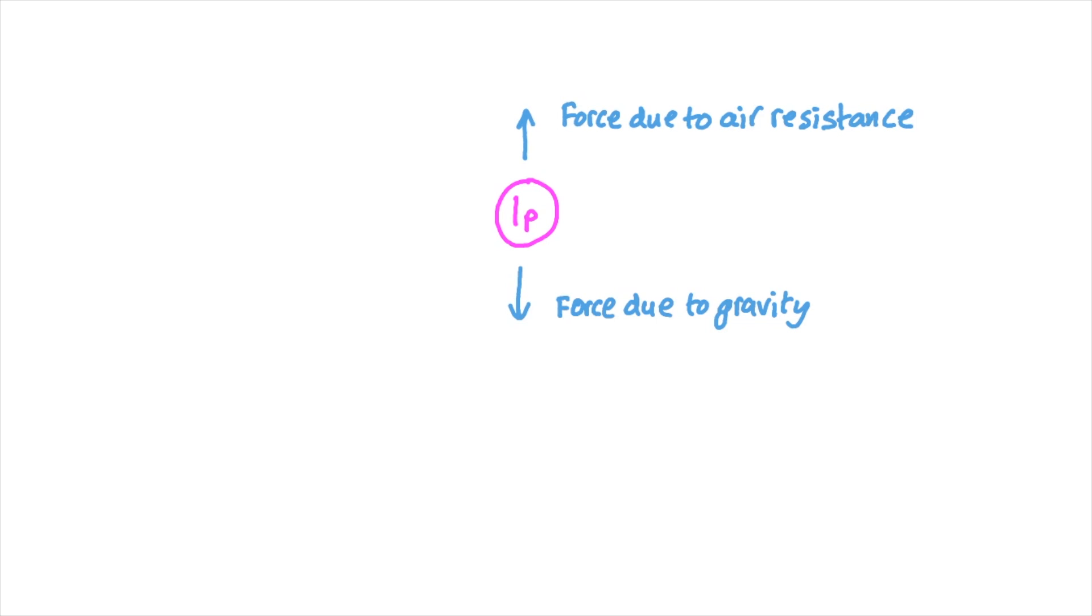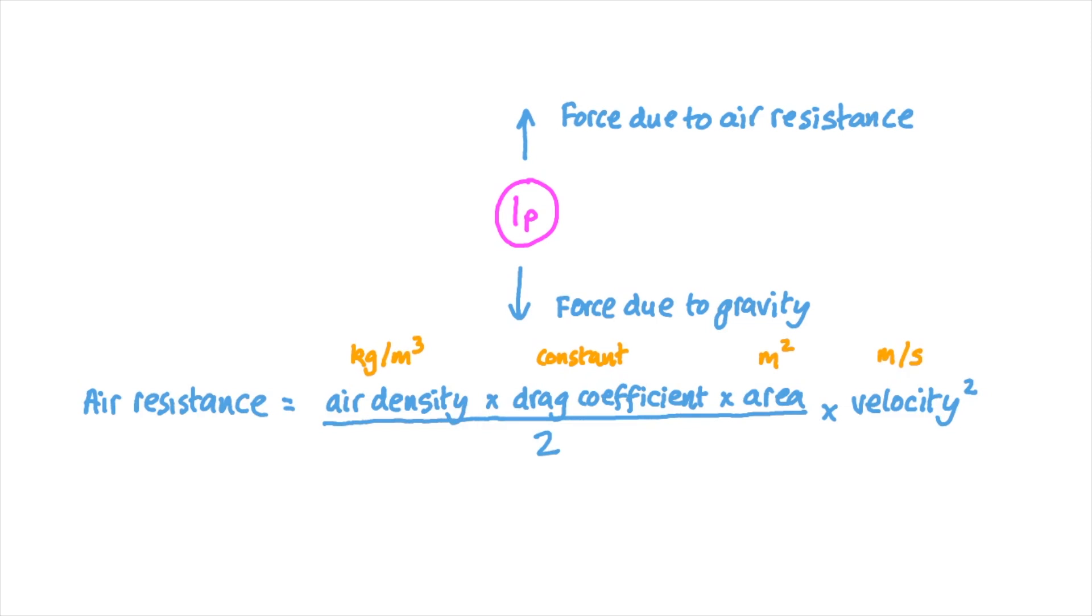When an object is falling towards Earth, it has a force due to gravity acting on it pulling it downwards, but as it gets faster it has an increasing air resistance force acting against gravity to reduce the resultant downward force and so reduce the acceleration. The air resistance is equal to the density of the air measured in kilograms per cubic meter, times the drag coefficient of the penny, times the area of the penny which is facing downwards as it falls in square meters, times the square of the velocity in meters per second, all divided by two.